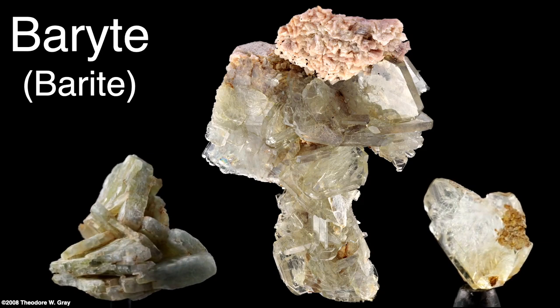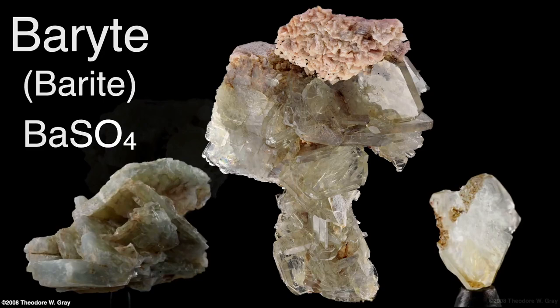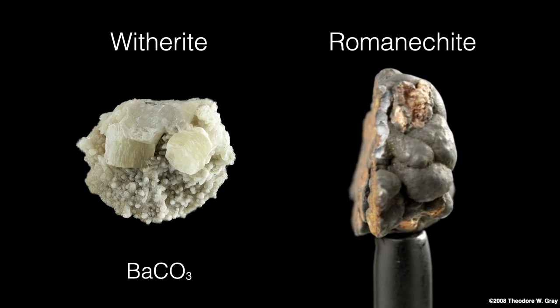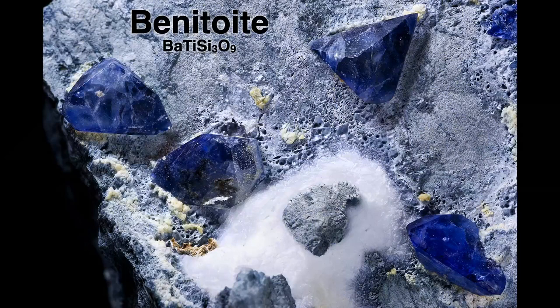Another source of barium, though less important than barite, is witherite, which is barium carbonate. Barium can also occur in romanokite, a composite mineral which is also a source of manganese. The barium mineral benitoite — barium titanium silicate — occurs as a very rare blue gemstone and is the official state gem of California. When exposed to ultraviolet light it fluoresces a beautiful blue.